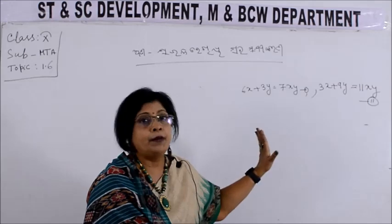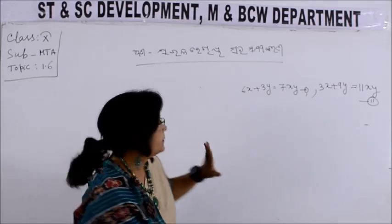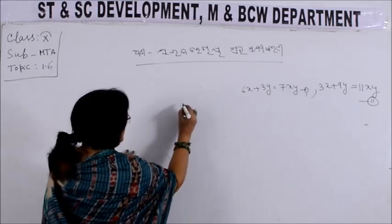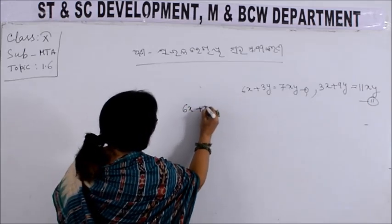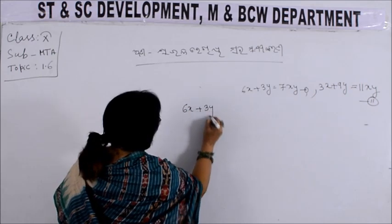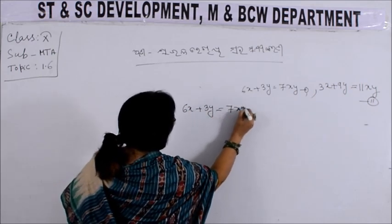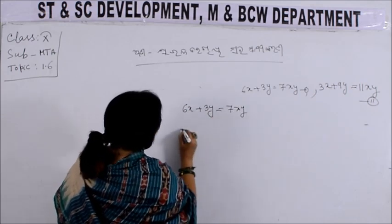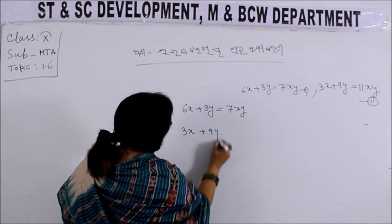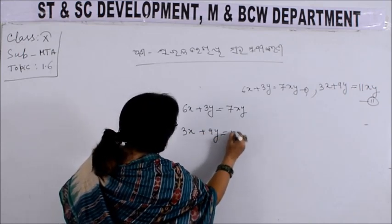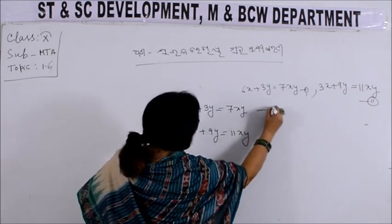That is the exact process of 5-5. So let's see. Direct we have done. 6x plus 3y is equal to 7xy. 3x plus 9y is equal to 11xy. So let's see.